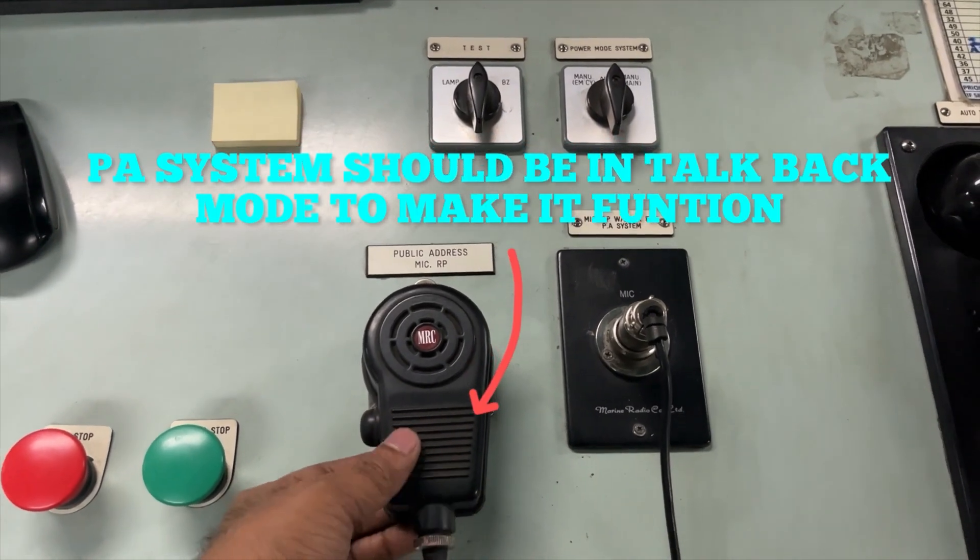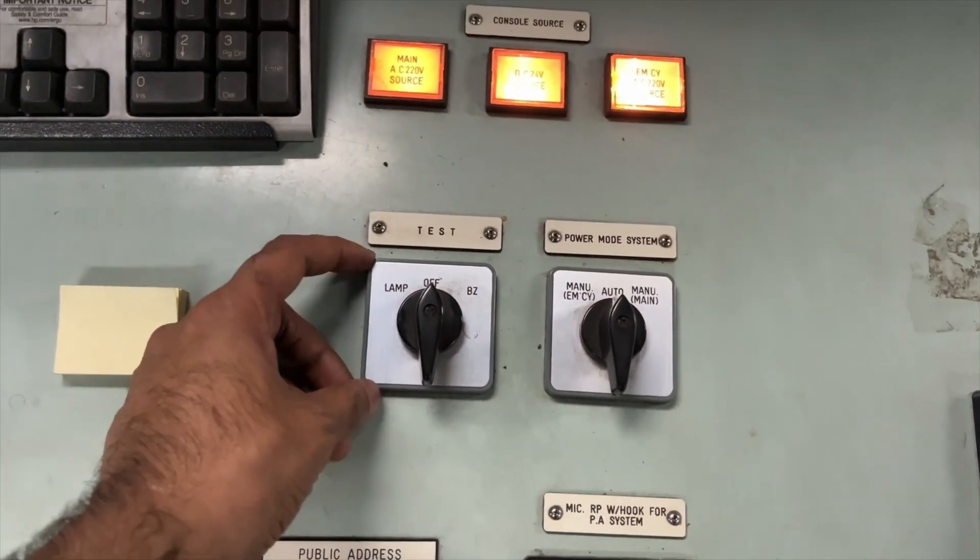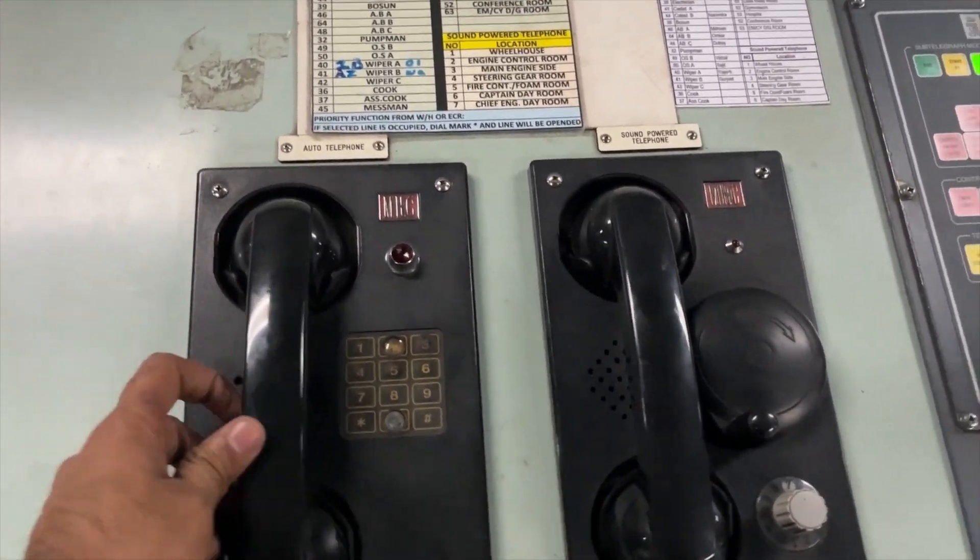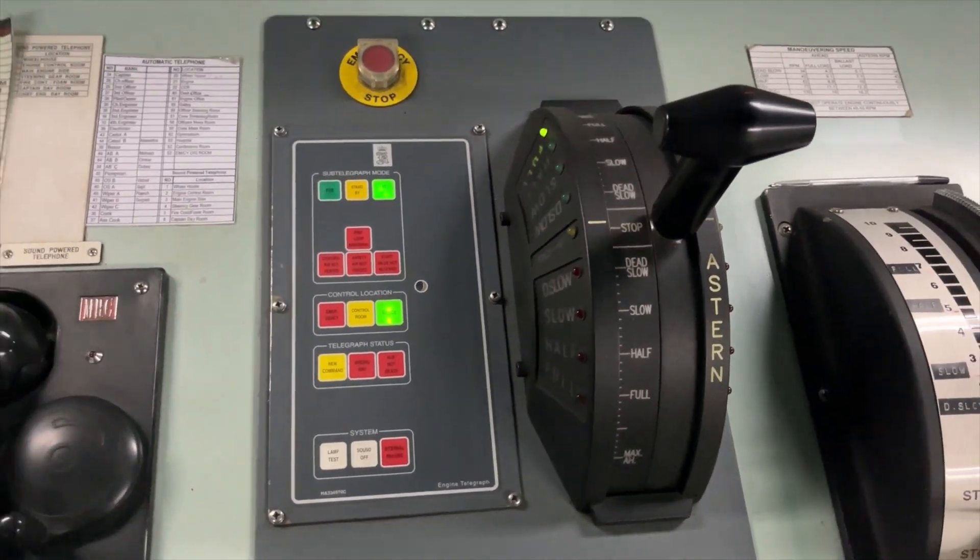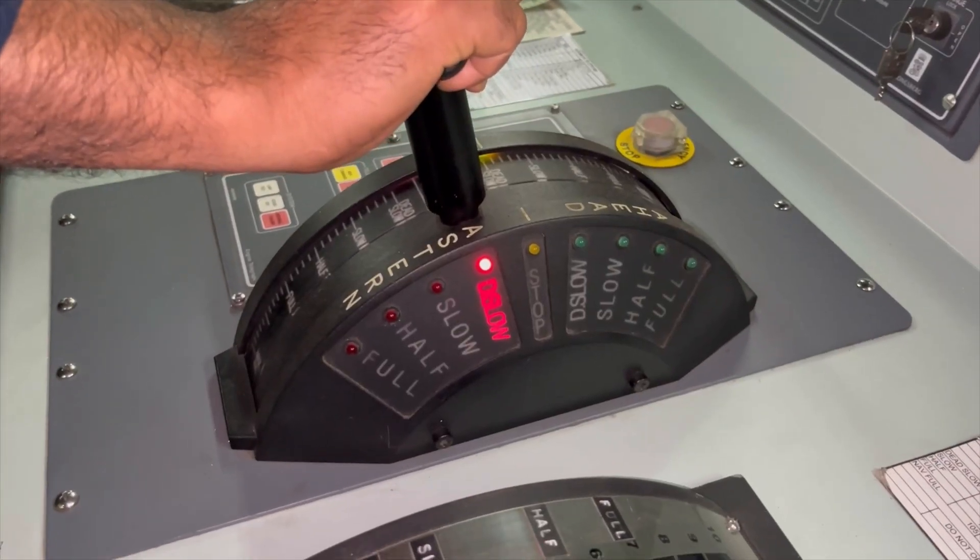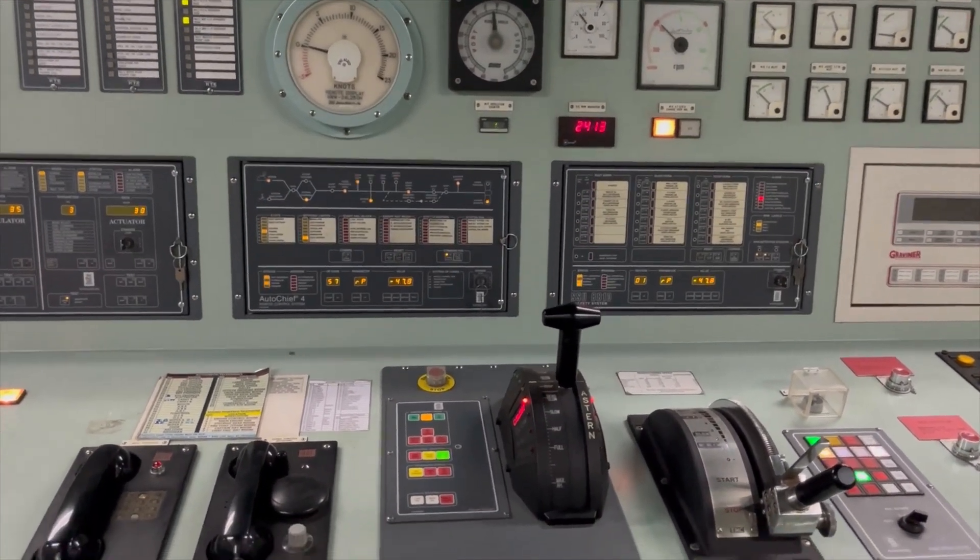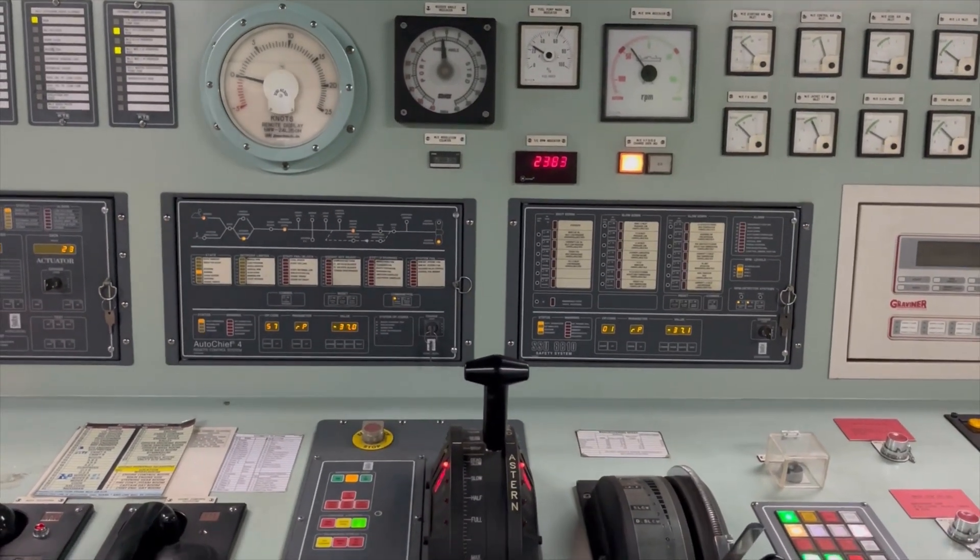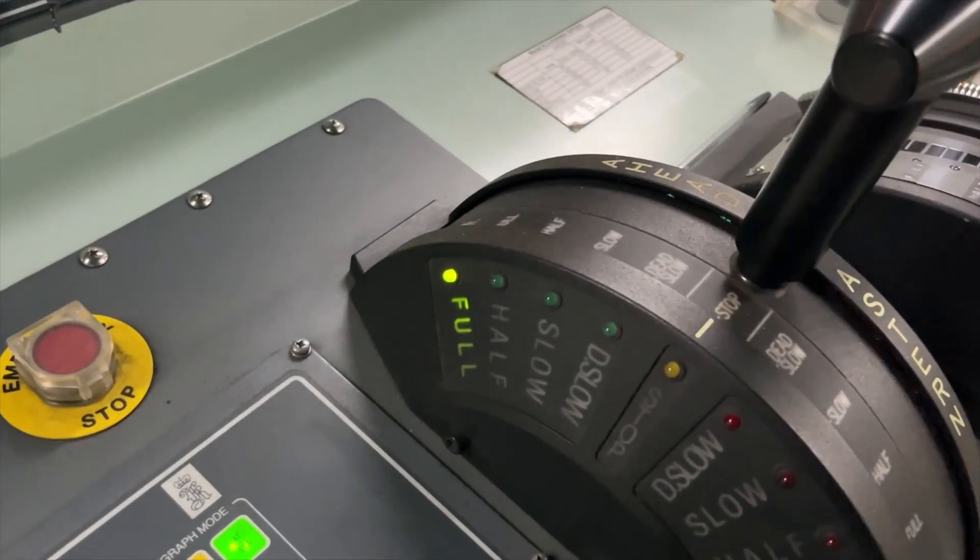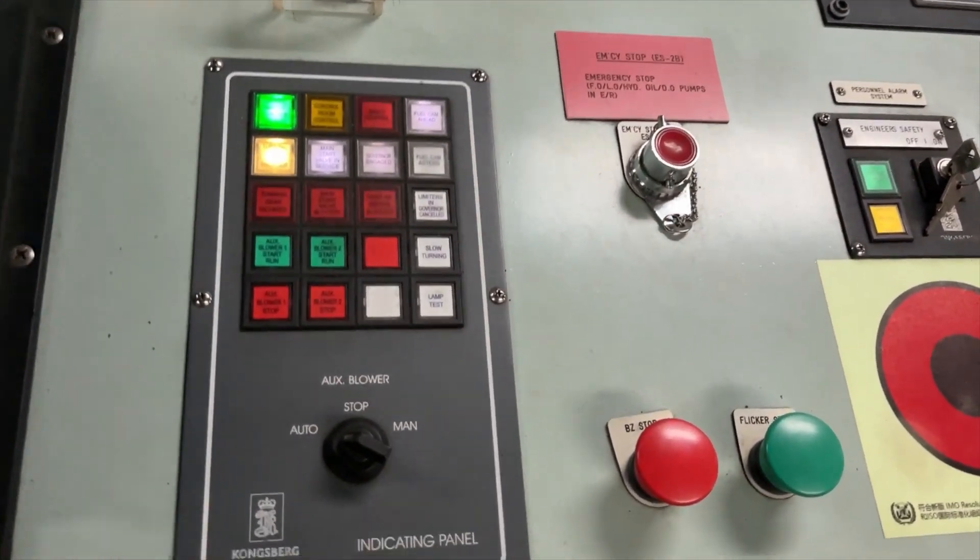This is the mic for public address so in case of emergency you can make the announcement just by pressing this. This is the power system mode lamp and budget test indication for DC emergency and main power source, two sets of phone one is auto one is sound power. This is the telegraph lever.